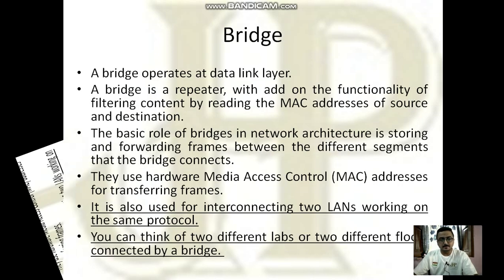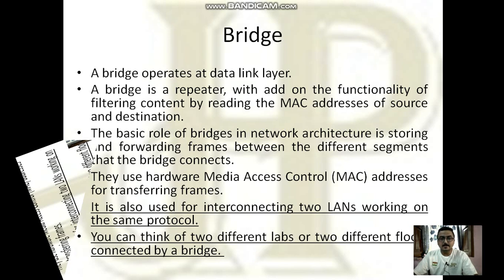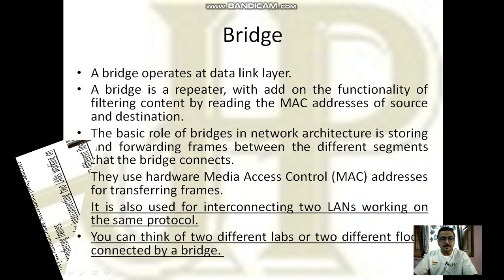The next one is bridge. A bridge is a repeater, but with the added functionality of filtering content by reading the MAC address of source and destination. This means a bridge can identify the source from where the data signals come and the destination where that signal is to be sent. It is also used for interconnecting two LANs working on the same protocol, which is why it is known as a bridge — just as a physical bridge connects two lands across a river.